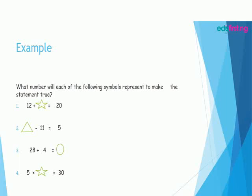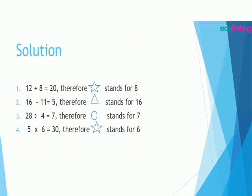Our solution is going to be: 12 plus star equal to 20, therefore star stands for 8. Triangle minus 11 equal to 5, therefore triangle stands for 16. 28 divided by 4 equal to 7, therefore circle stands for 7. 5 times 6 equal to 30, therefore star stands for 6.